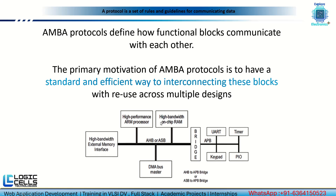To communicate between the processor and low-bandwidth peripherals, we use a protocol called APB. For high-bandwidth devices and functional blocks, we use a high-bandwidth protocol called AHB. To establish communication between these two — high-bandwidth and low-bandwidth — there is a bridge in between.